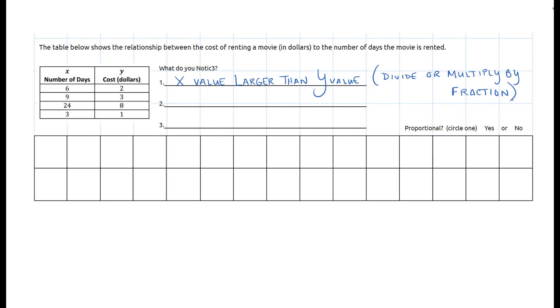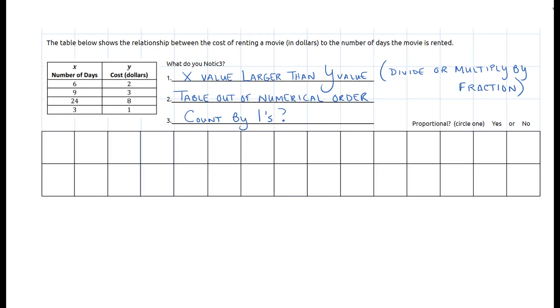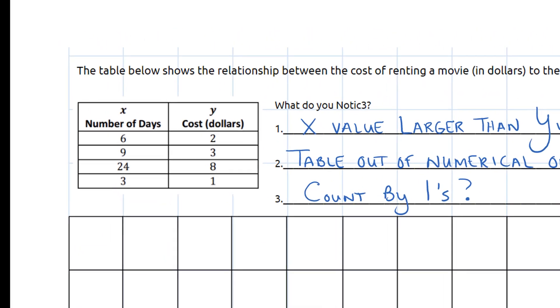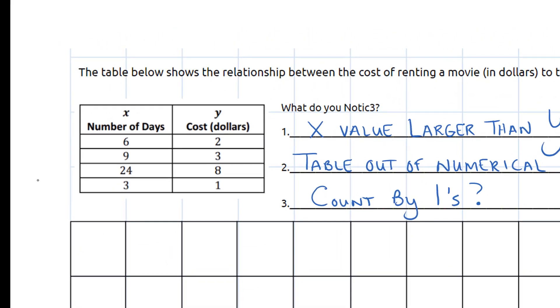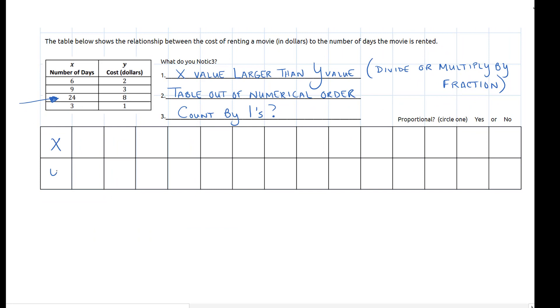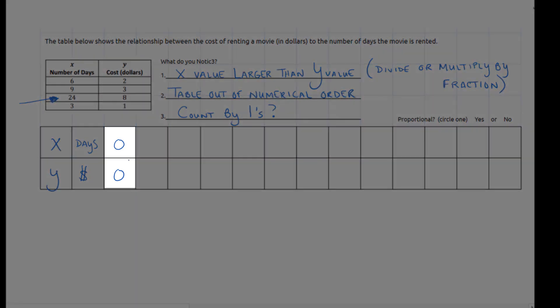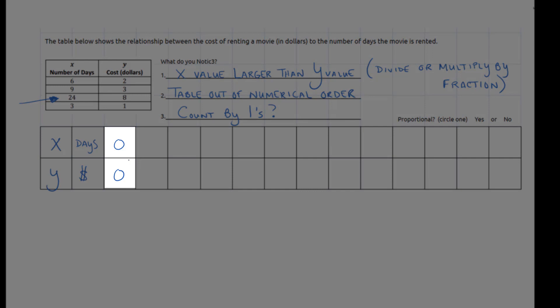Alright, something else, the table again is out of numerical order. And I'm looking hard to see is there a place where we can count by ones? Is it going to be easy to count by ones? I see a really big number that kind of sticks out to me here in 24. We didn't see that in the last example. I'm going to reorder my table and x is representing days that we get to keep the movie. y is representing dollars. And if this is going to be proportional we are going to be able to go through the ordered pair, the origin of 0 to 0.